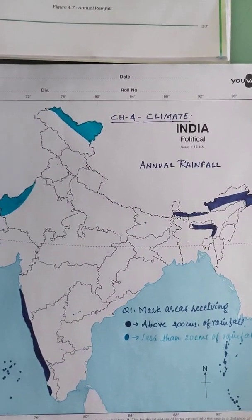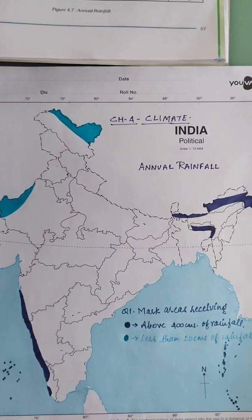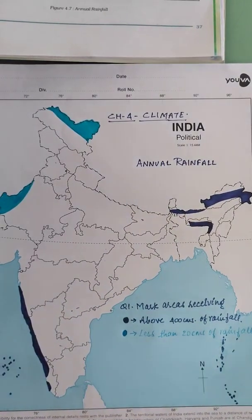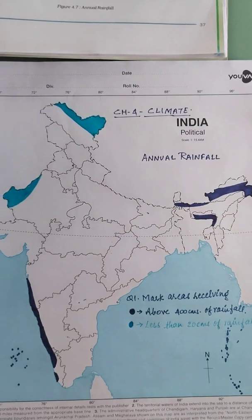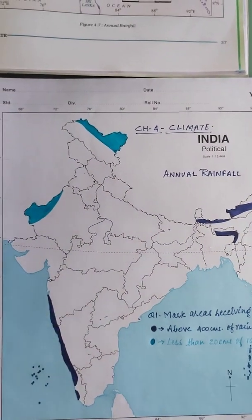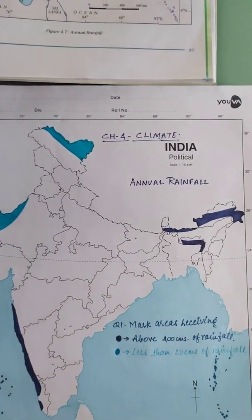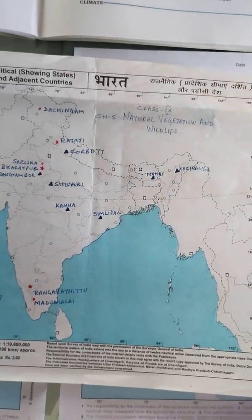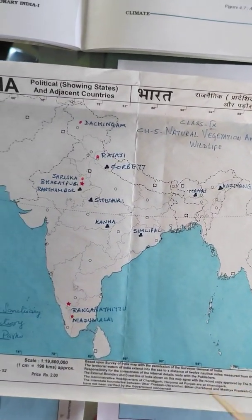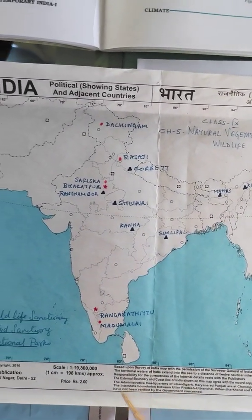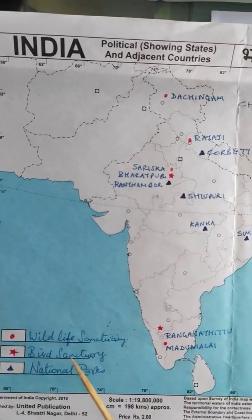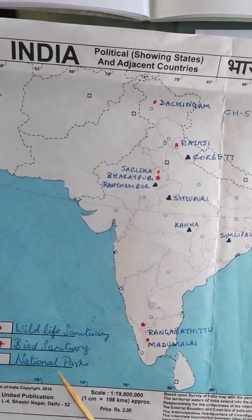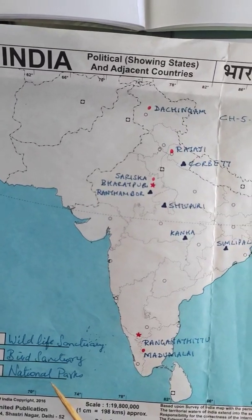After chapter 4, the syllabus includes Natural Vegetation and Wildlife. In this chapter you have two maps: one regarding wildlife sanctuaries, bird sanctuaries, and national parks. These will come for identification.